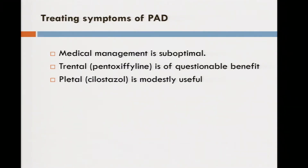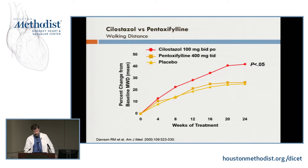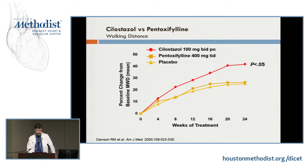Now let's talk about treating symptoms. Our medical management of symptoms is suboptimal. Trental is of questionable benefit. Cilostazol (Pletal), 100 milligrams twice a day, can improve walking distance about 30%. For Cilostazol's approval there were six separate trials, and you can see it improved walking distance compared to pentoxyphylline or placebo over time. Patients had a significant improvement in maximal walking distance on a treadmill. Pentoxyphylline wasn't much better than placebo and wouldn't be approved today based on current evidence.